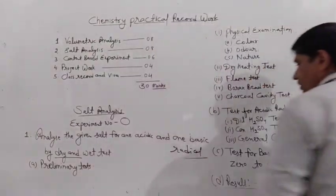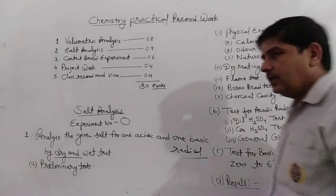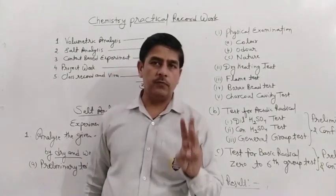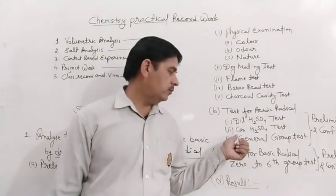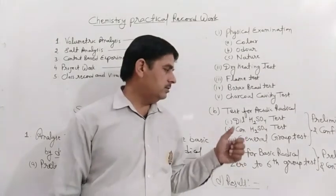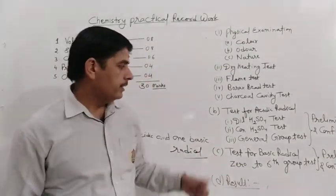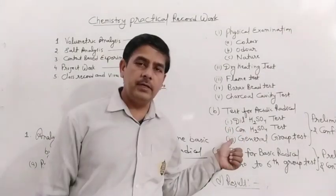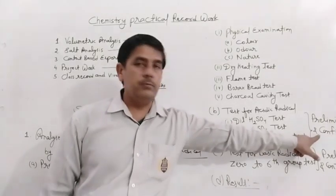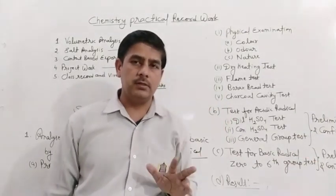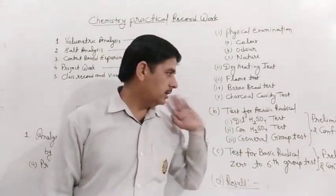After the preliminary tests, you have to write the test for acidic radical and then basic radical. For acidic radical there are three types of tests: the dilute H₂SO₄ test, concentrated H₂SO₄ test, and the general group test. The acidic radicals are divided into three groups. After writing these preliminary tests of dilute, concentrated, and general group, you will have to write at least two confirmatory tests. So this is what you have to do with the acidic radical.